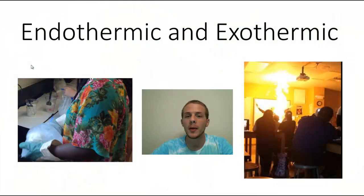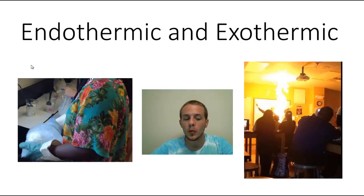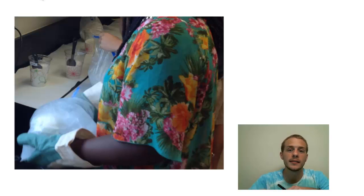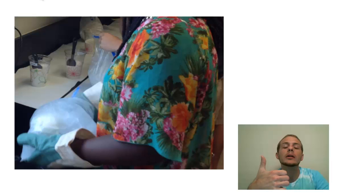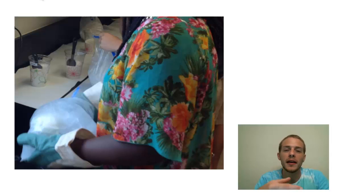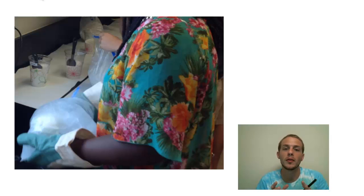Hello everyone. In this video we're going to talk about endothermic and exothermic processes. On the left side of your screen there is a photo of one of my students making ice cream in a bag. What you do is you take a small plastic bag and fill it with a mixture of three things: half-and-half, sugar, and a small amount of vanilla extract. You seal that small bag and place it inside a larger bag.